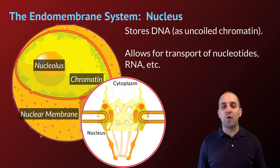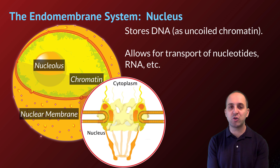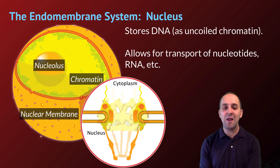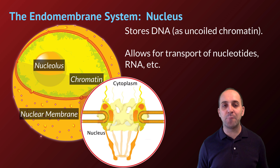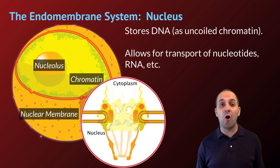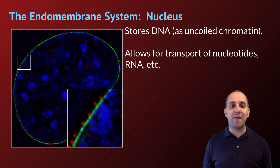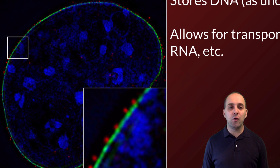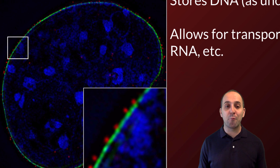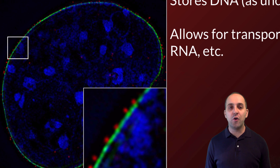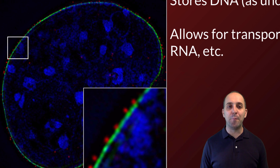The nucleus also has a structure called the nucleolus — a region of DNA specifically involved in producing ribosomal RNA subunits. Here is a fluorescence micrograph of the nucleus. We can see the nuclear pore proteins stained in red, the nuclear membrane stained in green, and the chromatin stained blue.